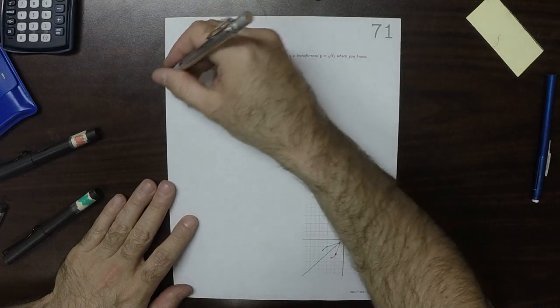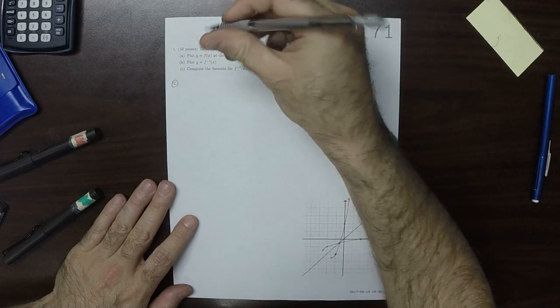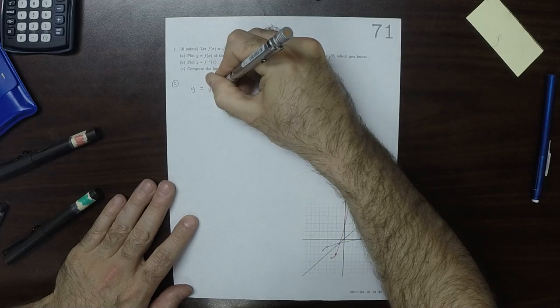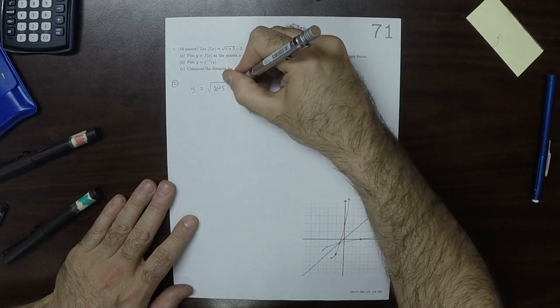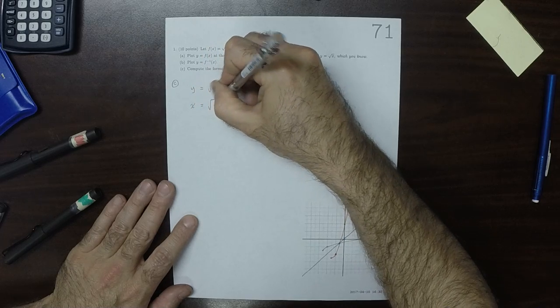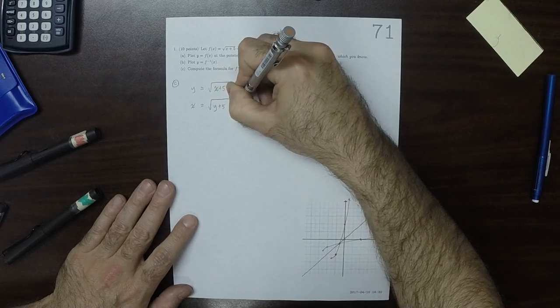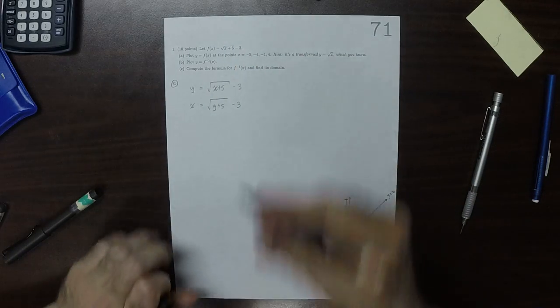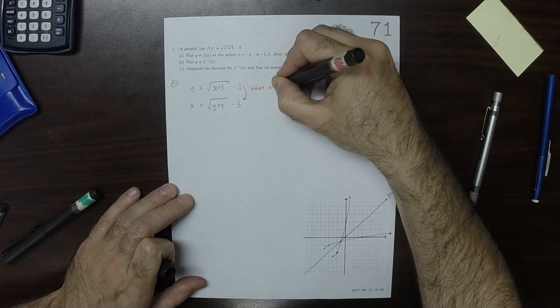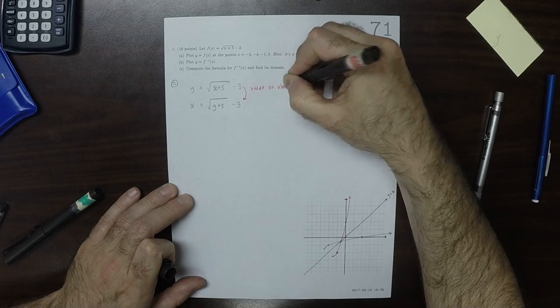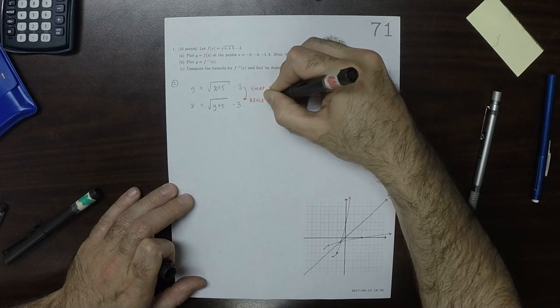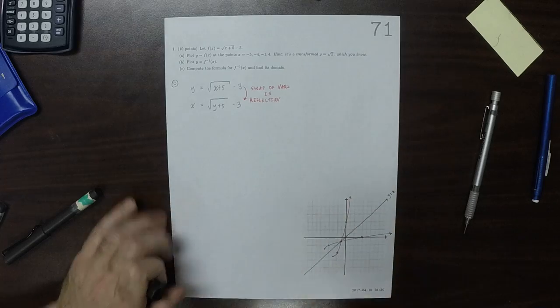So now find the formula for f inverse and its domain. So for c, we'll take that and write y is square root x plus 5 minus 3. Swap the variables. So x is square root y plus 5 minus 3. Notably, remember that this swap of variables is reflection.